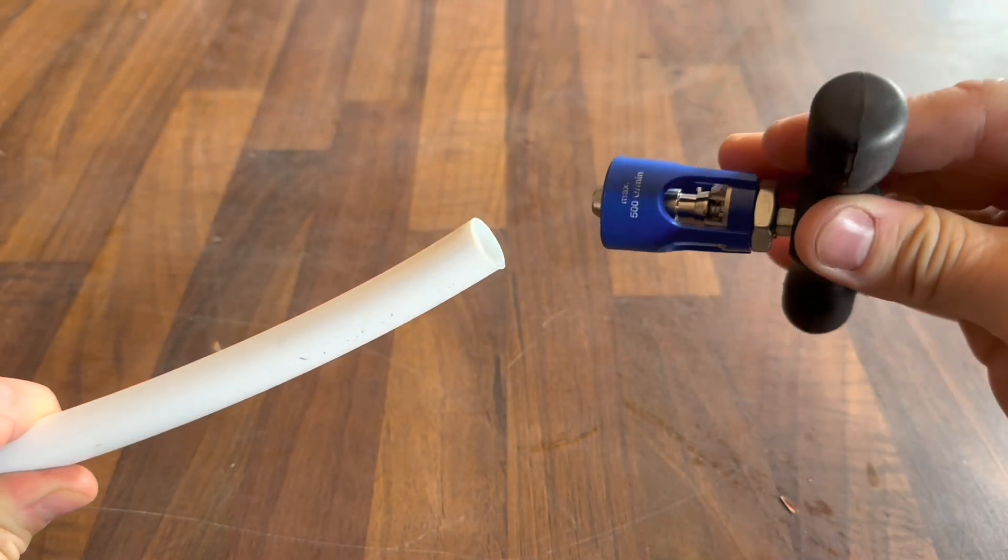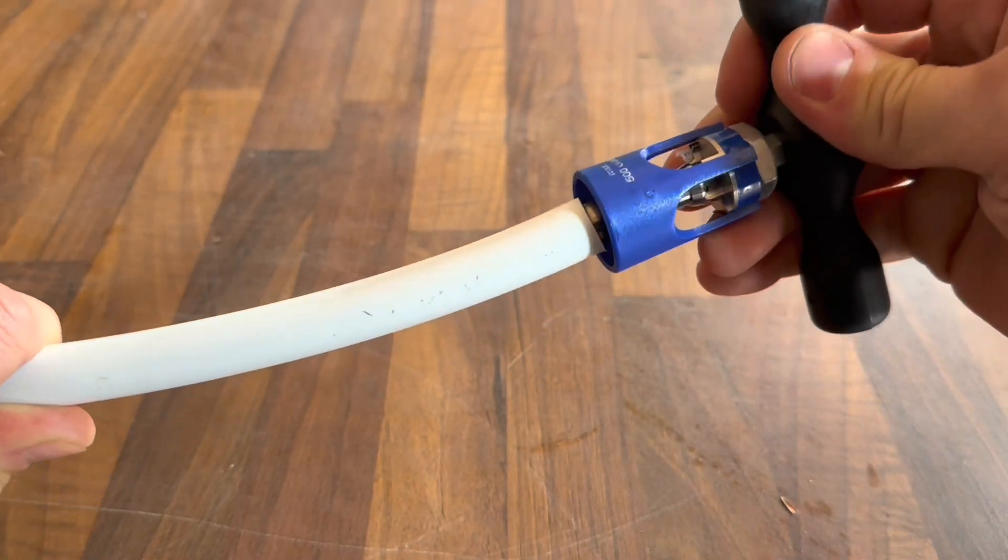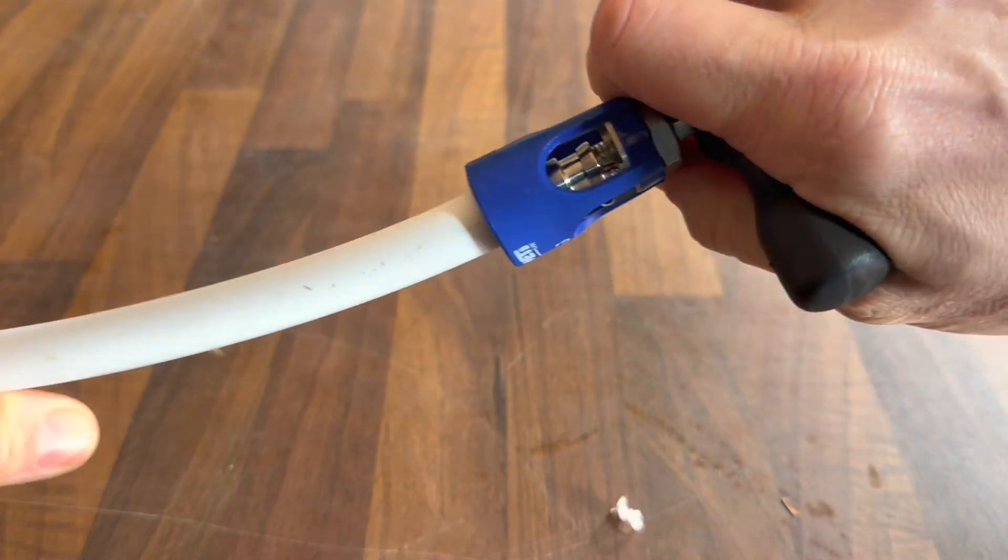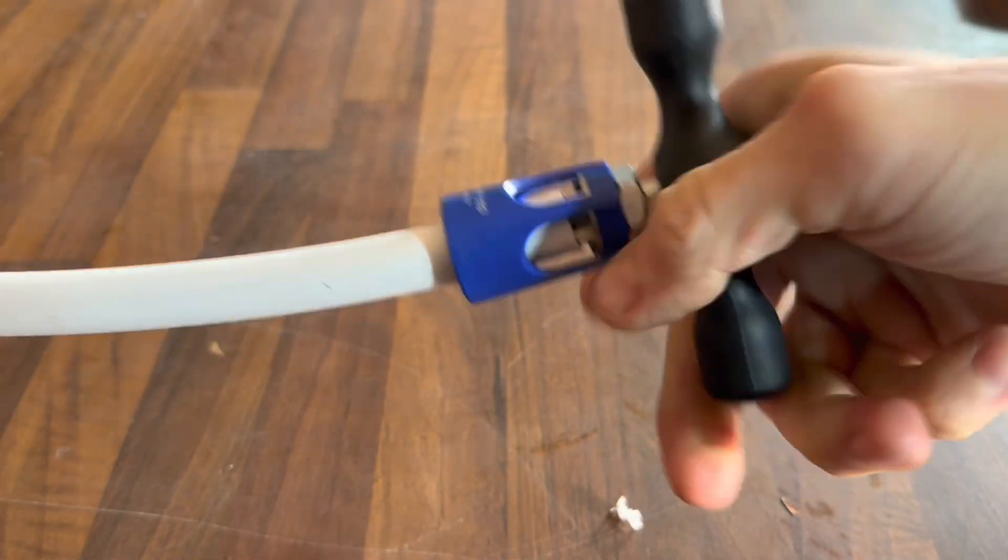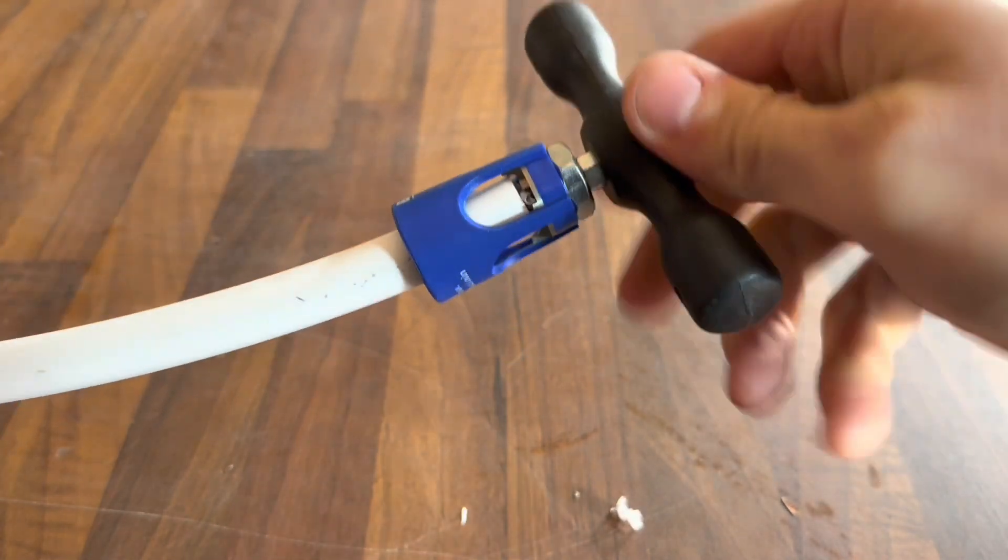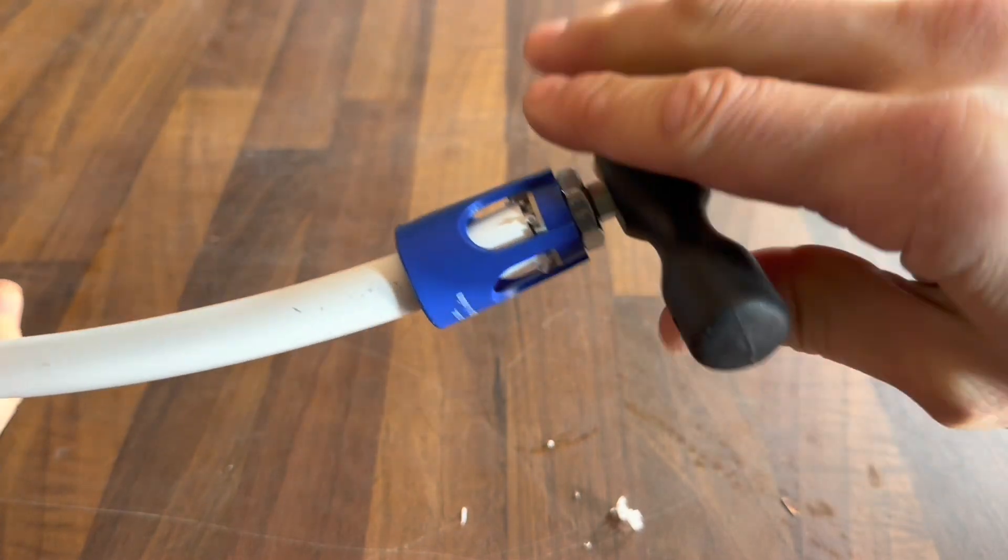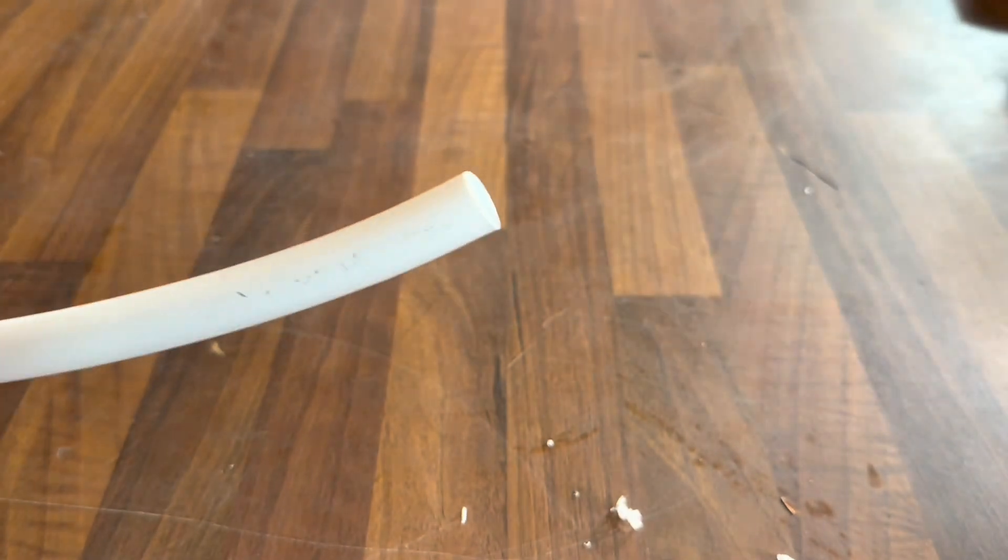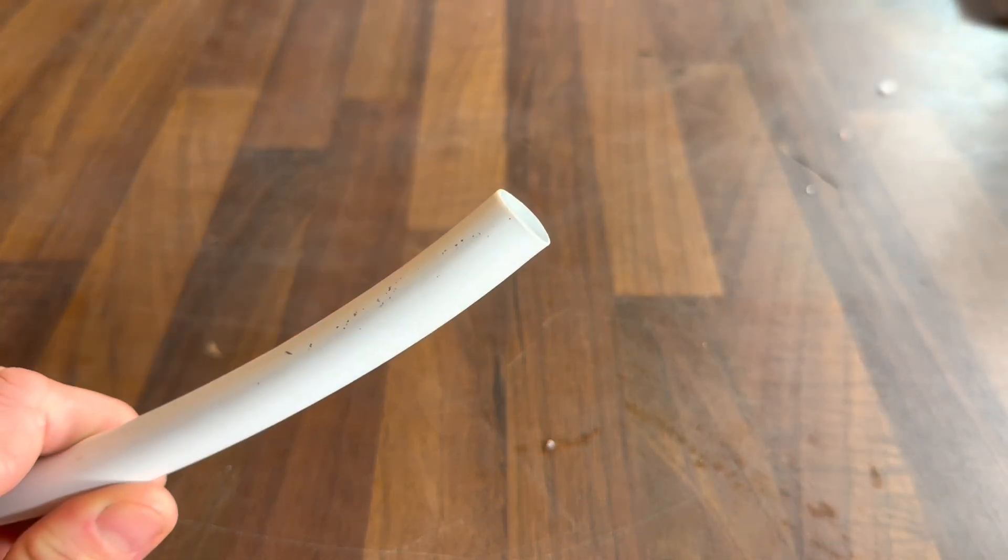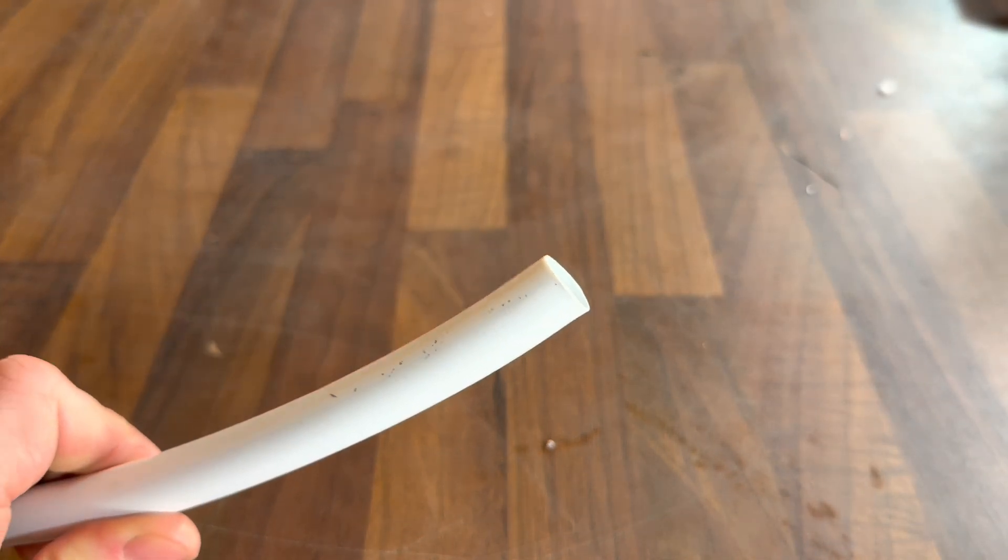We've got a deburring tool here so this just goes into the end of the pipe. You can get these as a drill attachment if you want to pop it in your cordless drill. Sometimes that's better for the bigger sizes and we're just preparing the end of the pipe there a few turns and now that's ready to take a fitting.